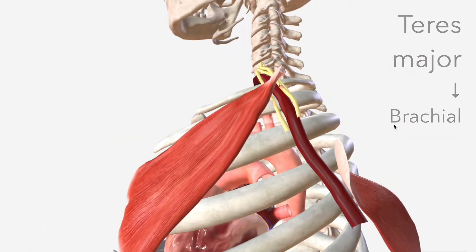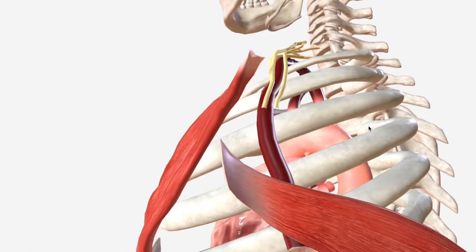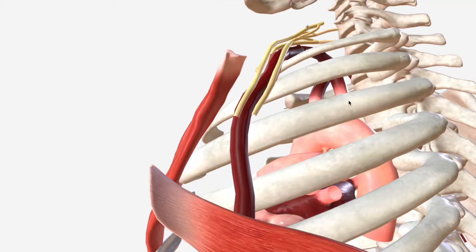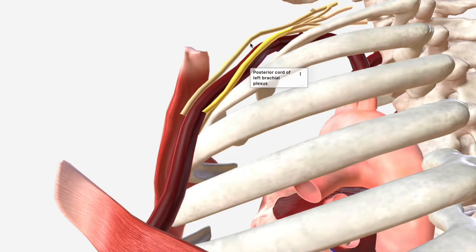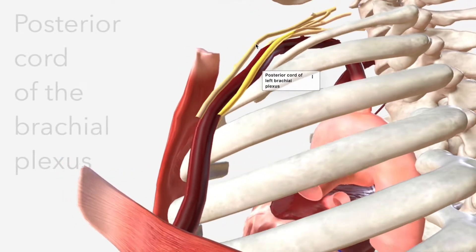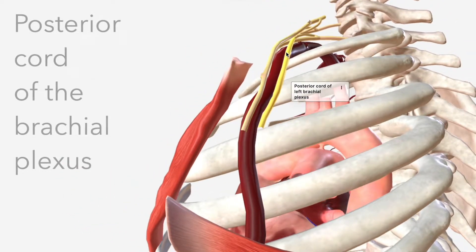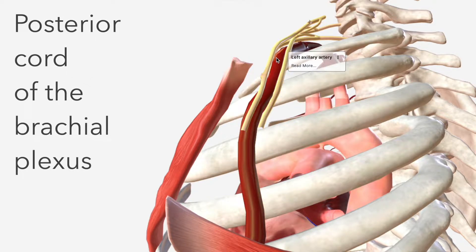An interesting point of note about the axillary artery is its relation to the brachial plexus. Indeed, the posterior cord of the brachial plexus is named for its relationship to the axillary artery.